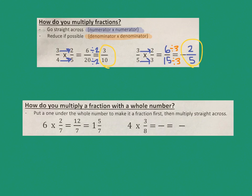Looking at the bottom, we're still going to work with fractions, but this asks: how would you multiply a fraction with a whole number? The rule is pretty simple. All you need to do is put a 1 under your whole number to make it a fraction, and then we still just multiply straight across — put a 1 under the whole number, and then multiply straight across.